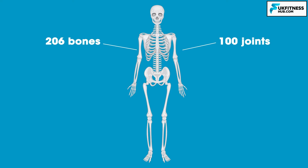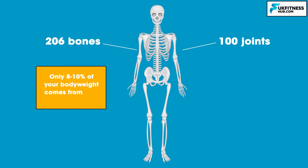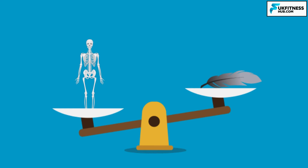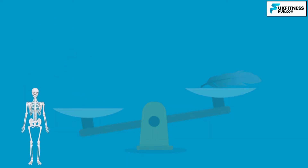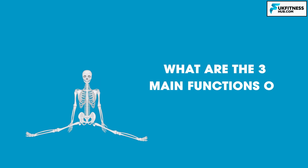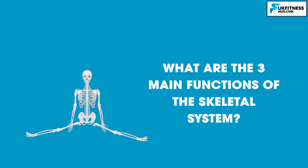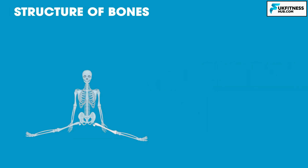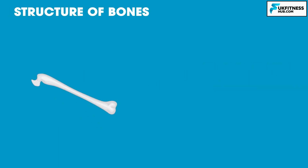It often surprises people that only 8-10% of your body weight comes from your bones. So how come bones are so strong but weigh so little? How come bones are both rigid and flexible? And what are the three main functions of the skeletal system? Let's look at the structure of bones.